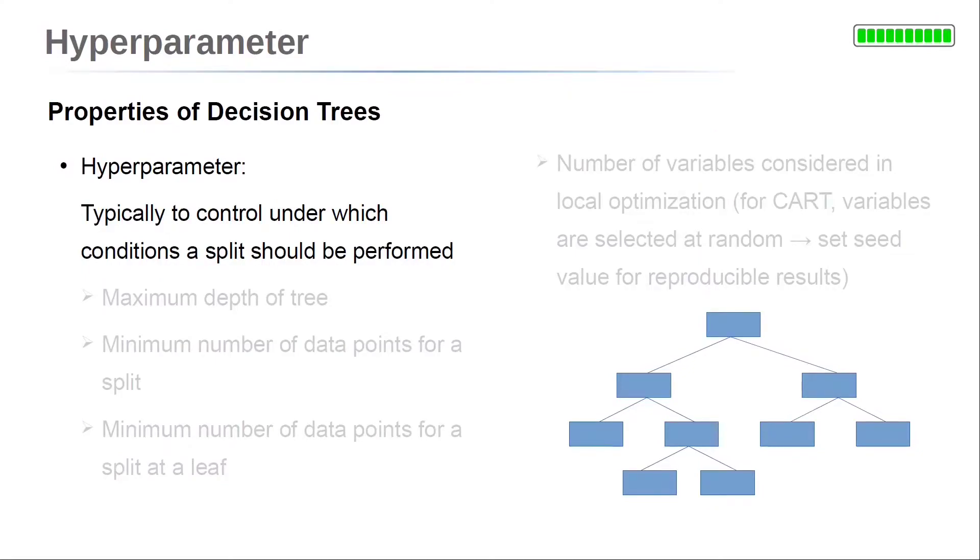There are several possibilities to control the conditions for a split. This is done by specifying hyperparameters of the algorithm. The first one is the maximum depth of the decision tree. This hyperparameter limits the number of possible successive splits. So if the maximum tree depth is 2, the decision tree can perform a first split, and on each half another split can be performed if necessary. But that's it.